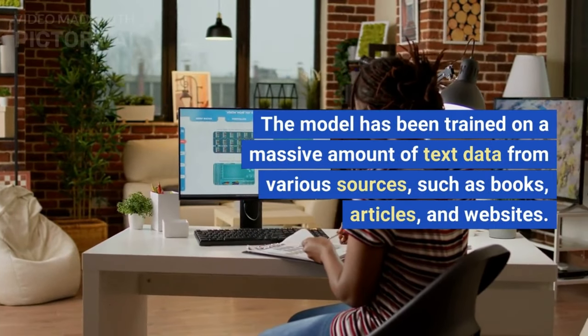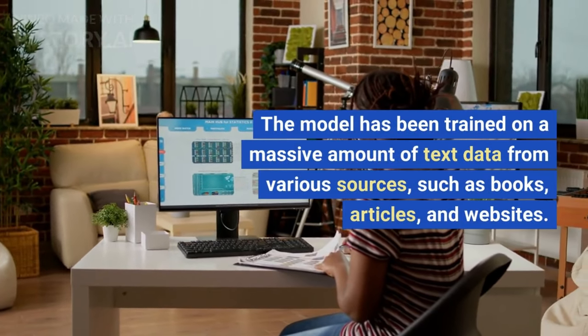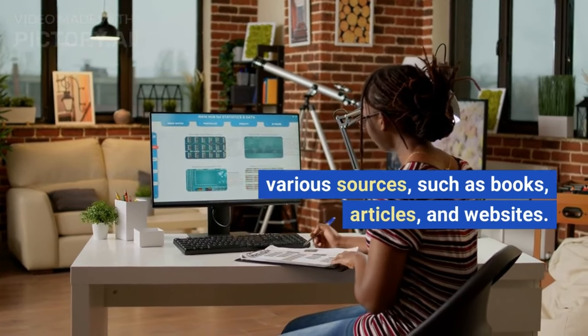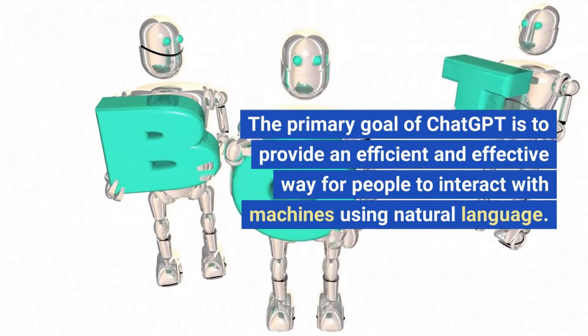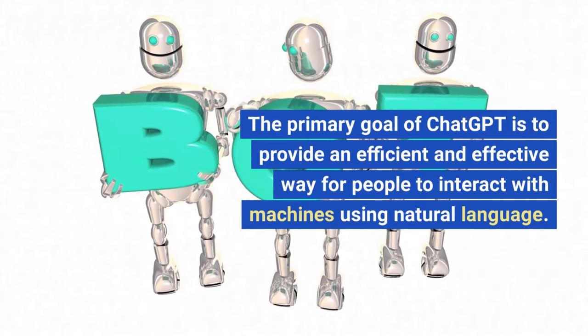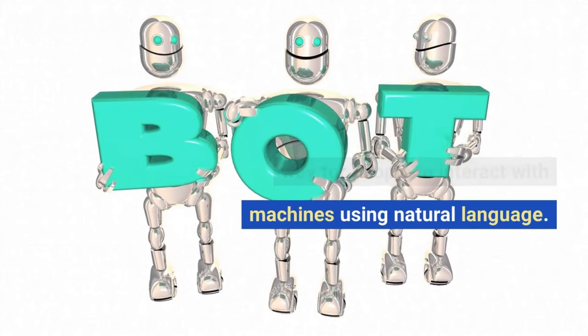The model has been trained on a massive amount of text data from various sources, such as books, articles, and websites. The primary goal of ChatGPT is to provide an efficient and effective way for people to interact with machines using natural language.